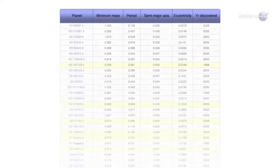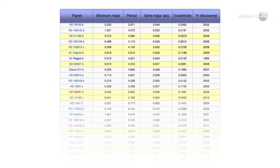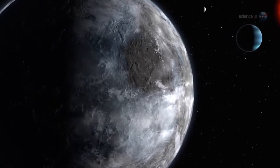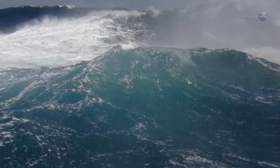As the numbers mount, it seems to be just a matter of time before Kepler finds what astronomers are really looking for: an Earth-like planet orbiting its star in the Goldilocks zone, that is, at just the right distance for liquid water and life.